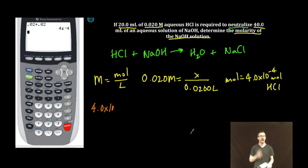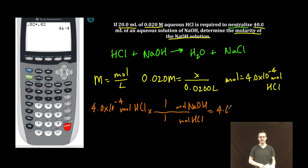Now comes the stoichiometry. I know that I reacted 4.0 times 10 to the minus 4 moles of HCl, which means that I also reacted 4.0 times 10 to the minus 4 moles of NaOH, because the ratio in my balanced chemical equation is 1 to 1.